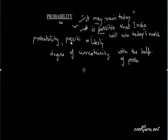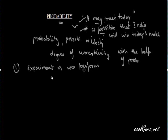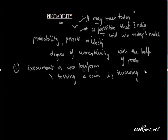There are some terms related to probability. The first is experiment — whatever we perform is called an experiment. For example, tossing a coin or throwing a die are both experiments.